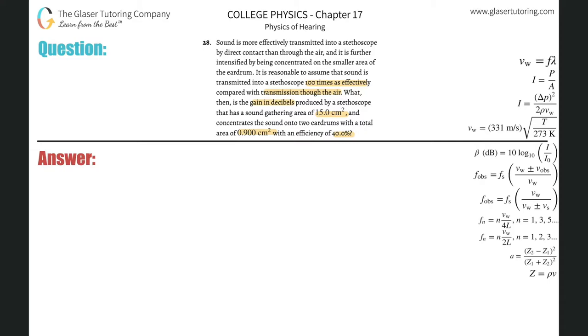So the formula here to find the decibel level increase, which is basically beta 2 minus beta 1, will be 10 times the log of I2 over I1. Now we further substituted values into this formula that we can generalize.